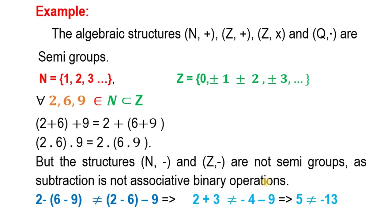A subtraction is not an associative binary operation. اگر ہم کوئی سے 3 elements لیں اور subtraction check کریں، تو associative property hold نہیں ہوتی۔ کیونکہ یہاں پہ value اور یہاں پہ value different ہے۔ For example, (9 - 6) - 2 = 1, but 9 - (6 - 2) = 5. لہٰذا یہ دونوں structures semi-groups نہیں ہیں۔